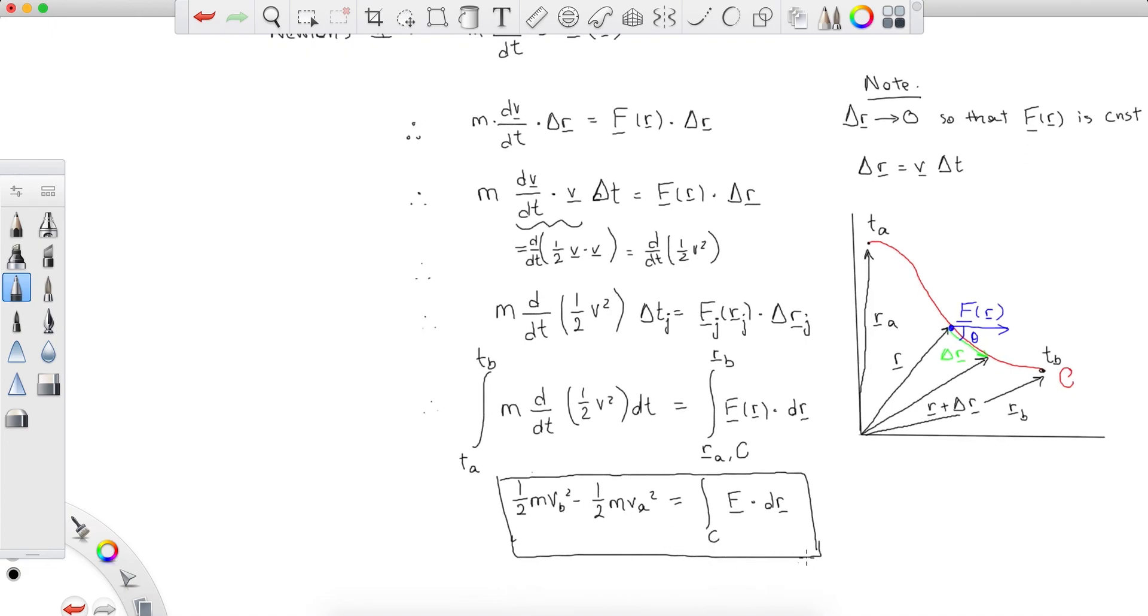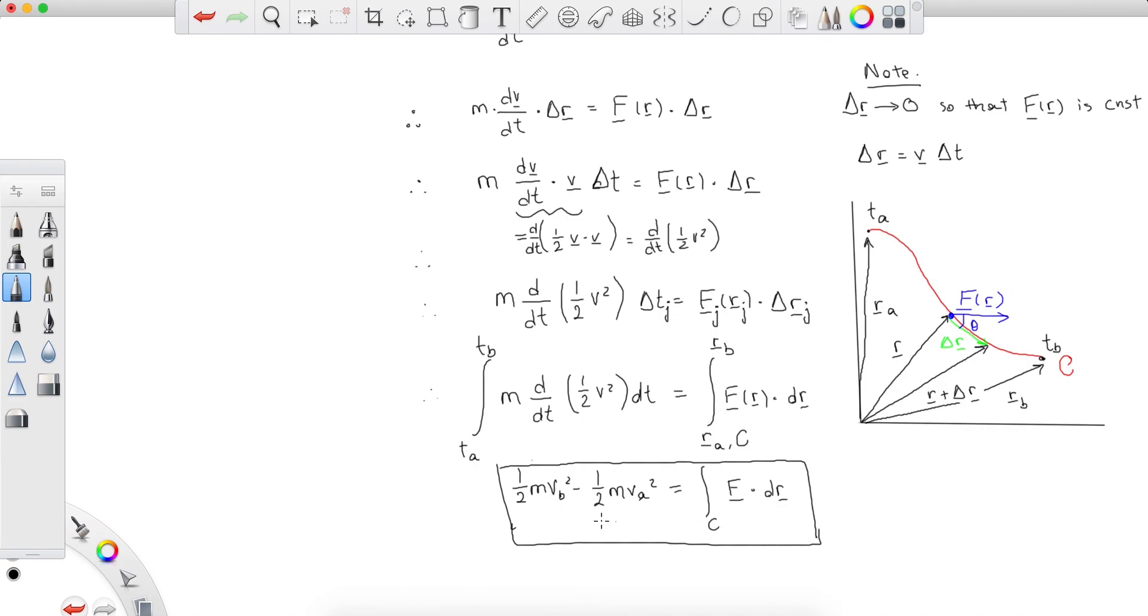Again, you can notice that the components are quite similar. This is exactly the same. It's the change in kinetic energy. And this, which has slightly changed, is the work done by F in moving the particle along C.